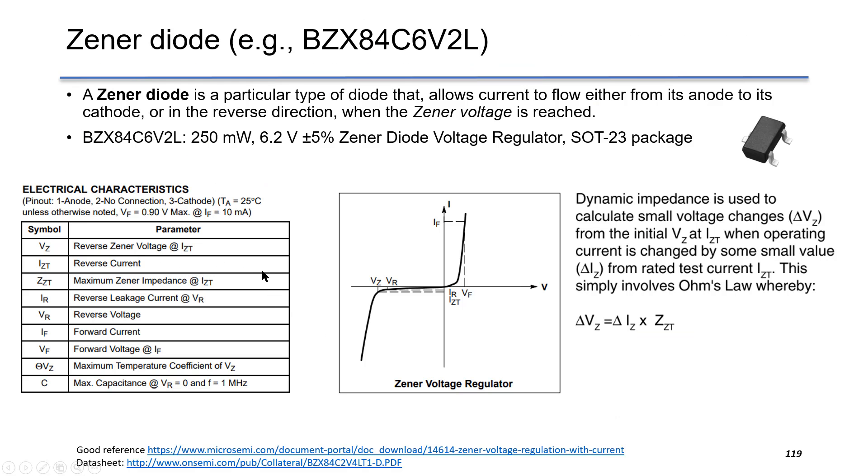This slide gives an introduction about Zener diode. A Zener diode is a particular type of diode that can work in both the first and the third quadrants of the I-V curve. The Zener diode allows current to flow not only from the anode to the cathode,